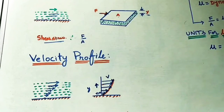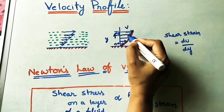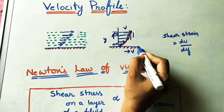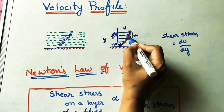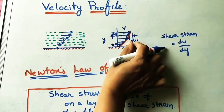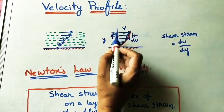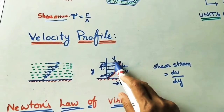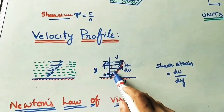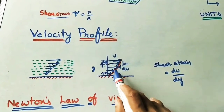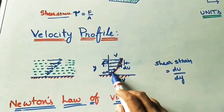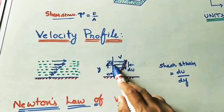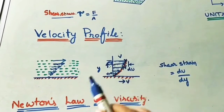Taking the velocity in two adjacent layers: the difference in velocities is du, and the distance between them is dy. In the velocity profile, velocity changes from zero to maximum. This change occurs because of cohesive forces between the layers of flow particles. Each layer offers resistance on the adjacent layer because of these cohesive forces.